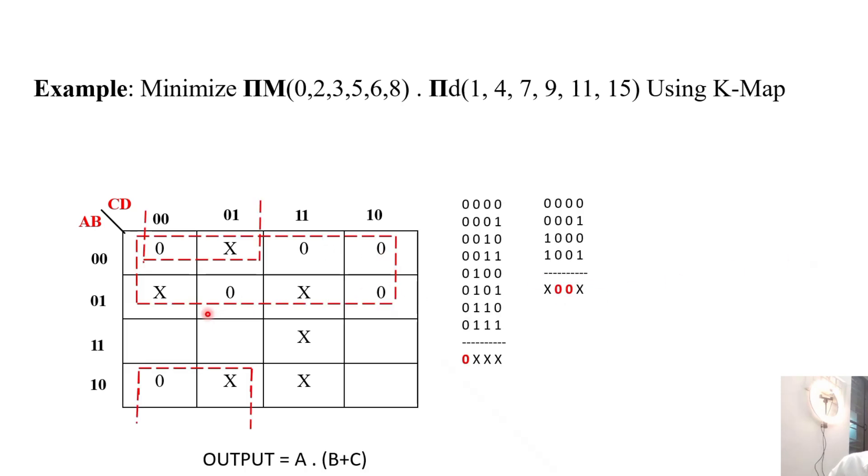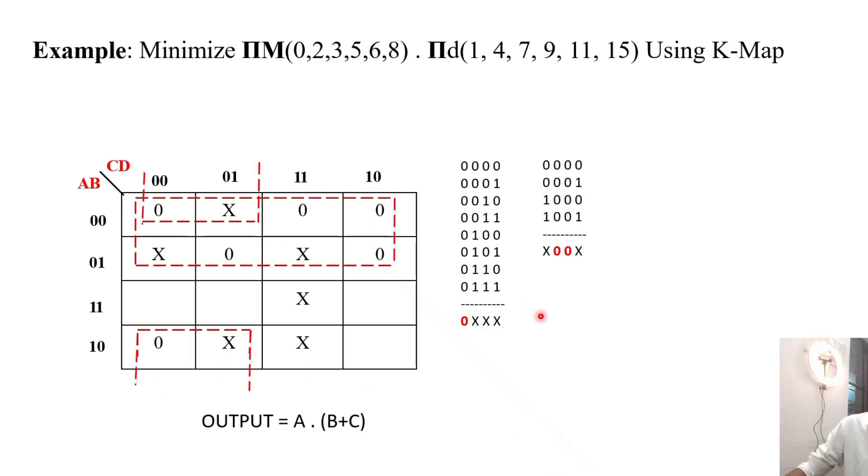As in the SOP case, form this 8-value group, then this 2 and this 2. Now we can get that A here - A dot here it's B plus C. The grouping is everything as we did before. There will be no change when we are using a don't care; it helps to form more number of groups.